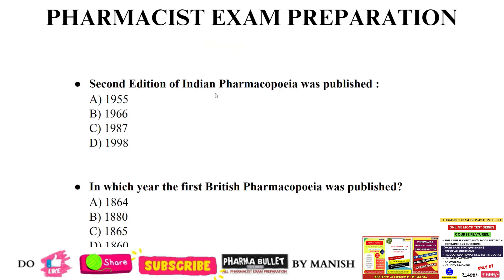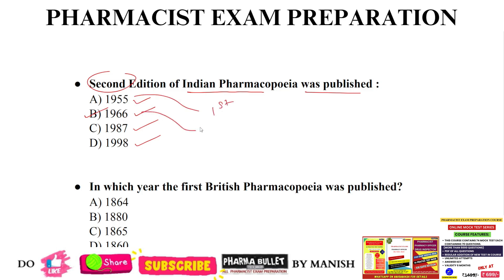Next question: the second edition of Indian Pharmacopeia was published in 1955, 1966, 1987, or 1998? The correct answer is 1966, option B. First edition of IP: 1955. Second edition: 1966. Supplement to the first IP was published in 1960, and supplement to the second edition of IP was published in 1975.